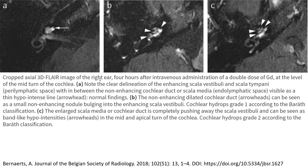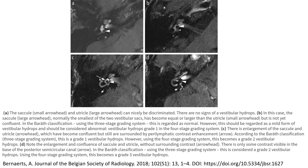In image C, the enlarged scala media of the cochlear duct is completely pushing away the scala vestibuli, and can be seen as a band-like hypointense structure, arrowhead indicated, in the mid and apical turn of the cochlea — cochlear hydrops grade 2 according to the BERAT classification.